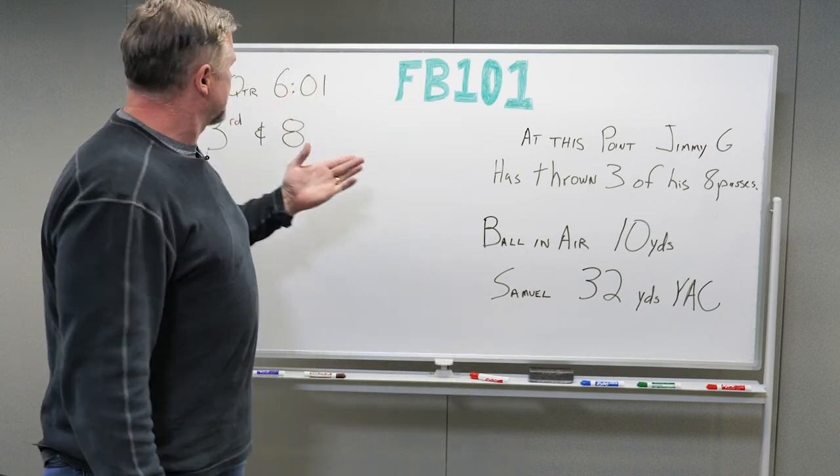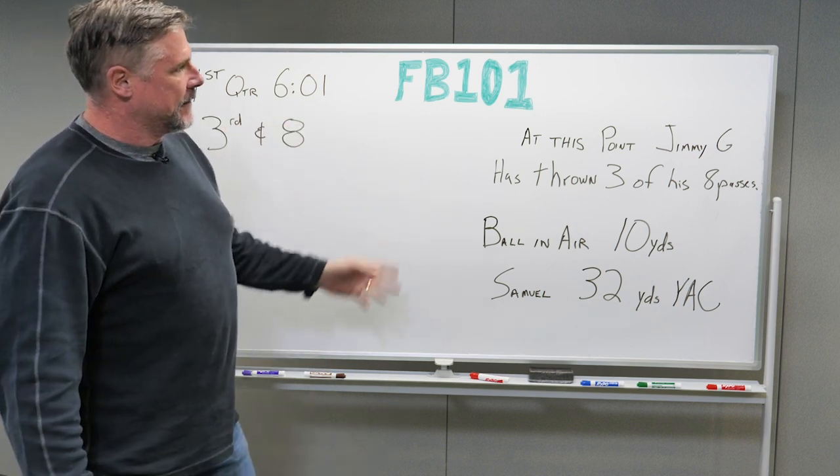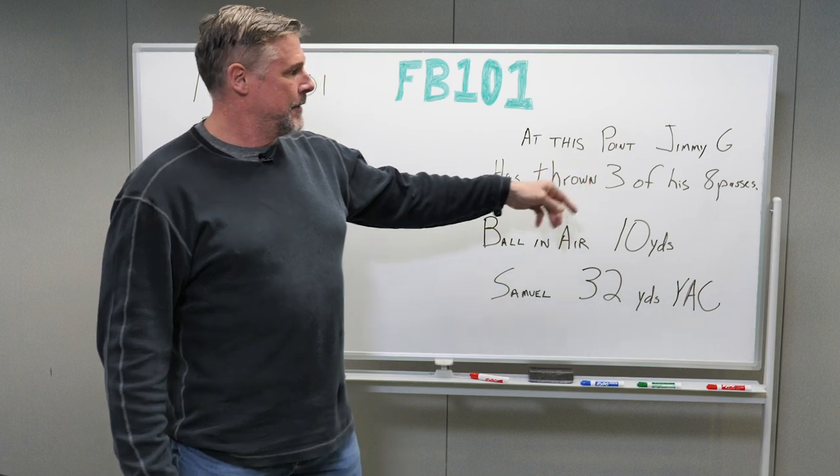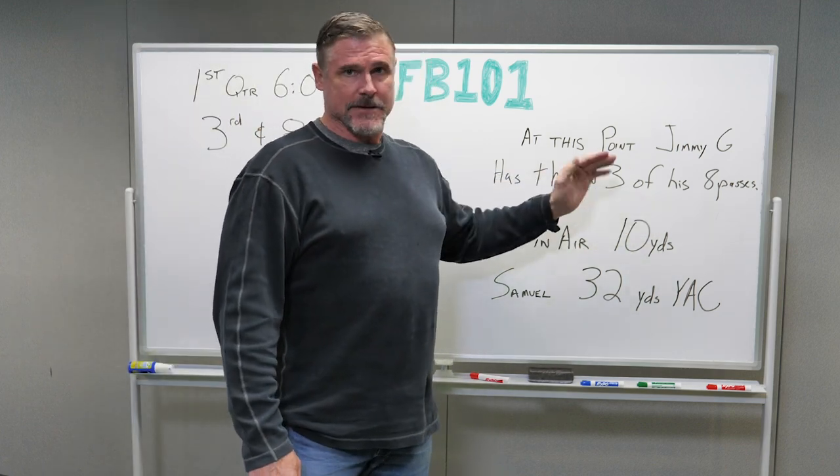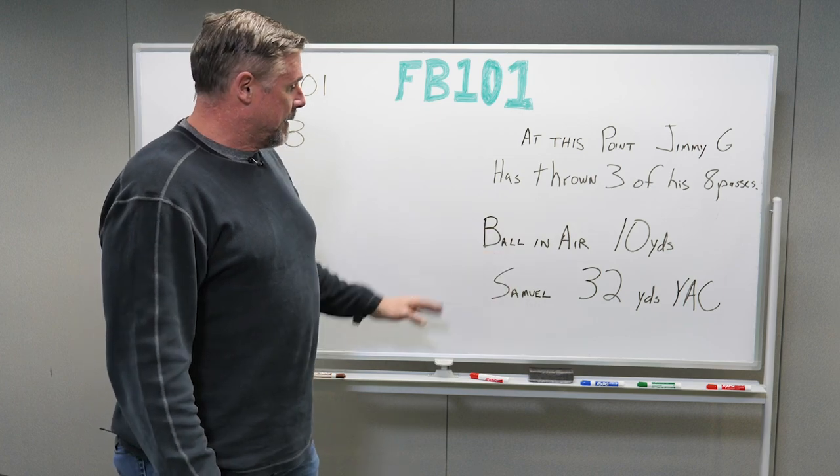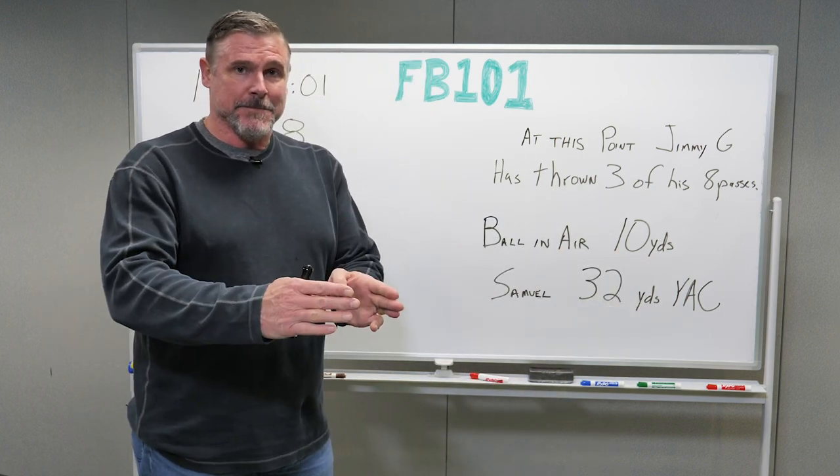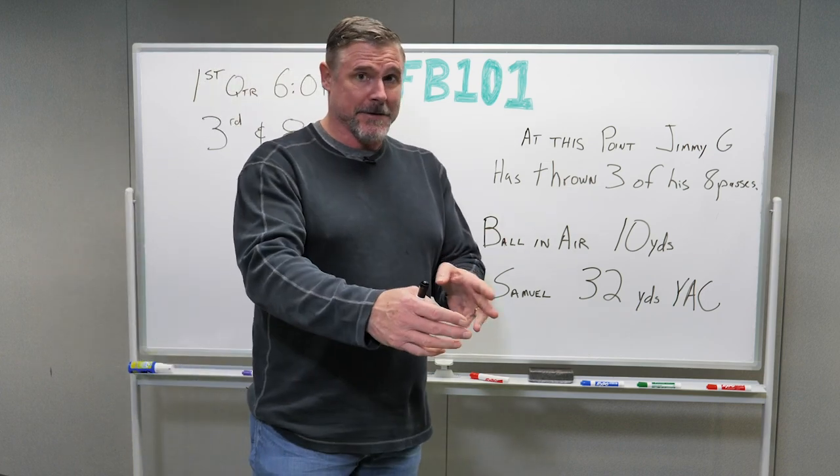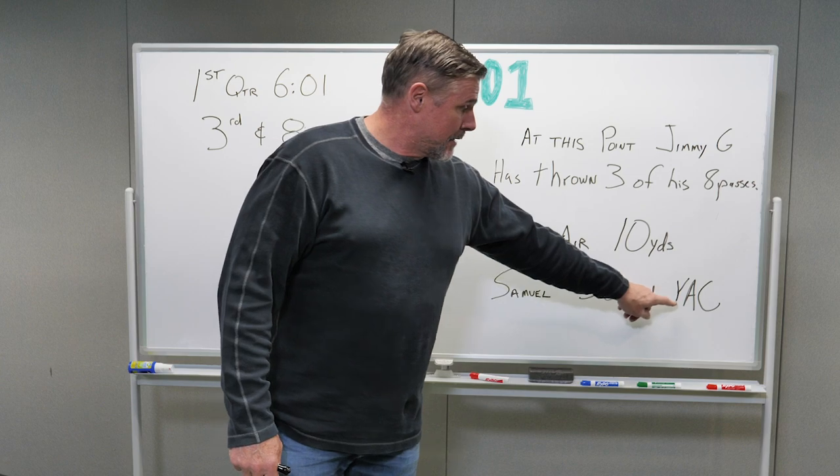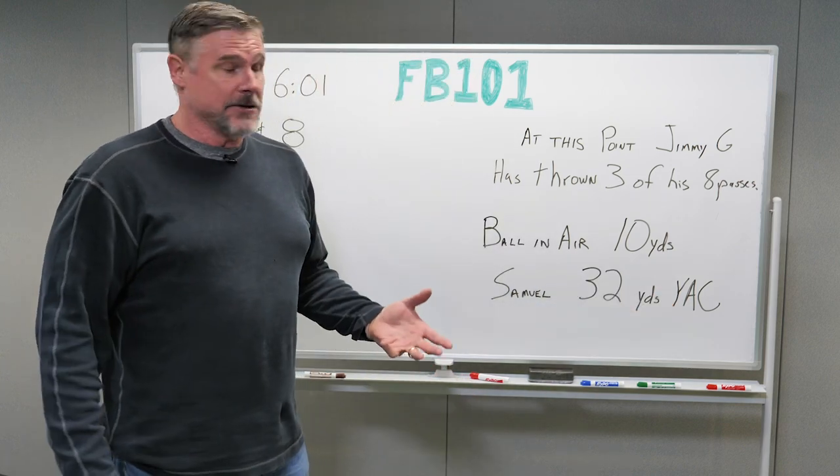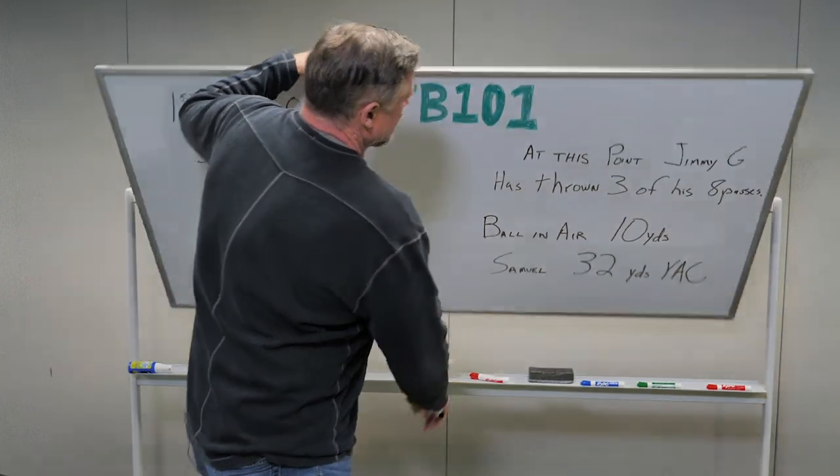But at this point, so it was the first quarter, 6-0-1, third and eight. And at this point, Jimmy Garoppolo, who threw eight passes in the game, he had thrown three of his eight passes up to this point. And the ball was in the air a total of 10 yards because one was two yards behind the line of scrimmage, another one was four yards behind the line of scrimmage. But with Debo Samuel getting 32 yards after catch, they end up all the way down on the 36-yard line. So let's take a look at this.